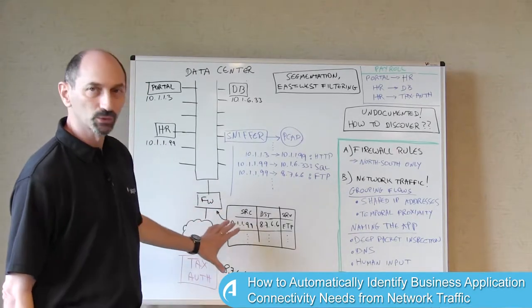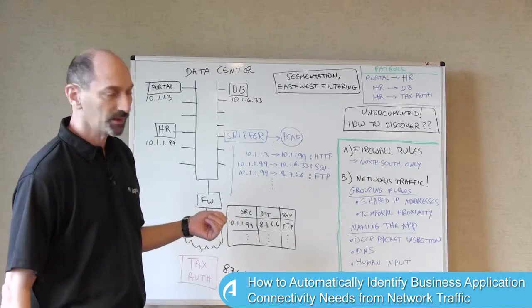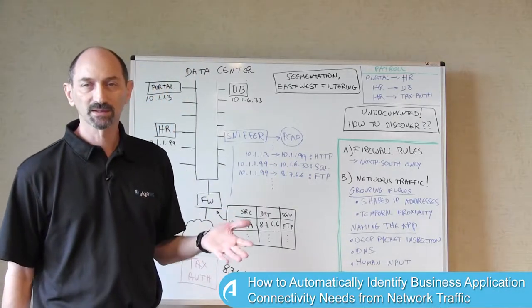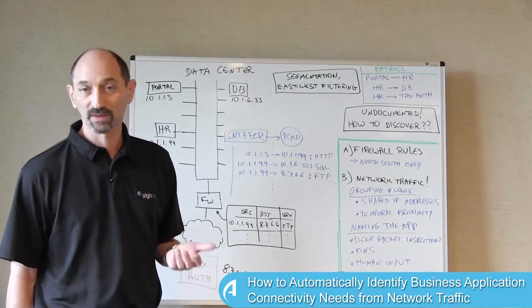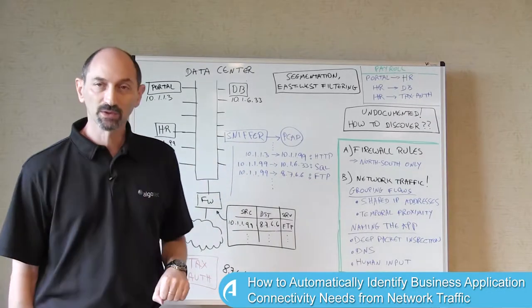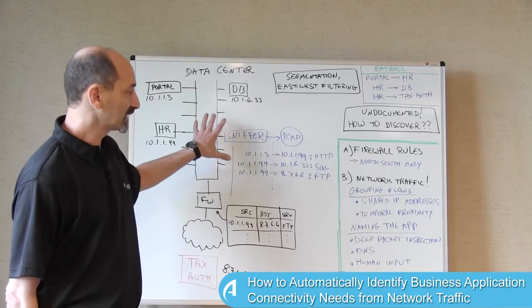The trouble is that firewall rules only document traffic going through them. Typically, that would be north-south traffic from inside the organization towards the outside world or vice versa. And it doesn't give you a lot of information about internal traffic going inside the data center. So how do you recognize that?